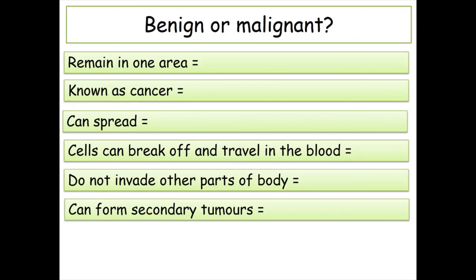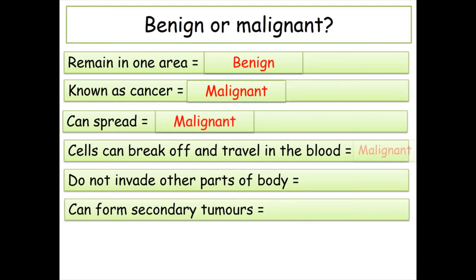Remain in one area — benign. Known as cancer — malignant. It can spread — malignant. Cells can break off and travel in the blood — malignant. They do not invade other parts of the body — benign. Can form secondary tumors — malignant.